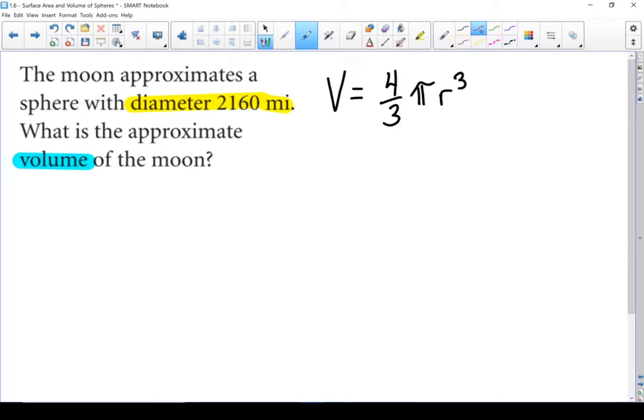Once again our formula calls for the radius. So let's convert that diameter into a radius. Our radius is 1,080 miles. Remember when we're talking about miles don't use an M. That stands for meters. Miles is MI. Let's put our numbers into the formula.